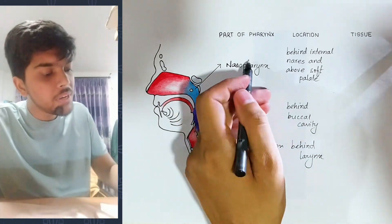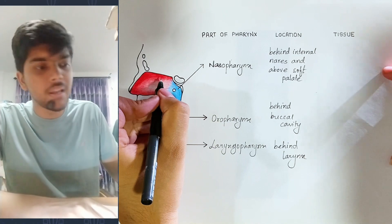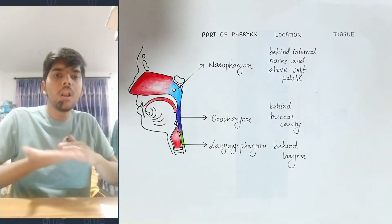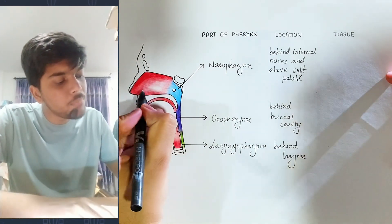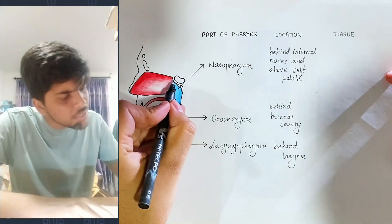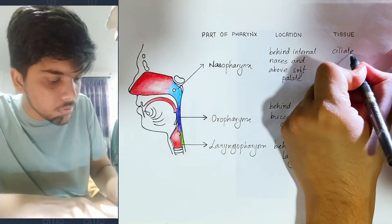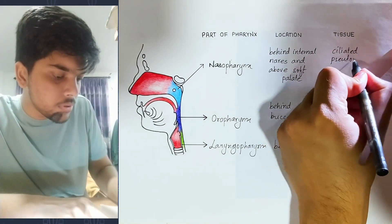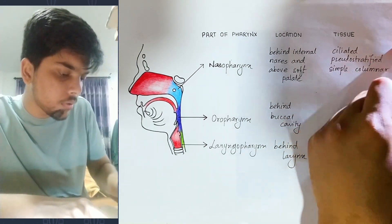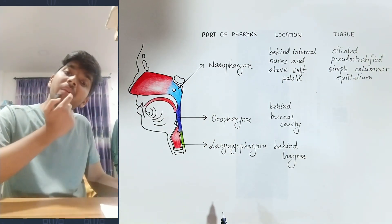The nasopharynx has a ciliated pseudo-stratified simple columnar epithelium, since the nasal chamber also has this epithelium. The nasal chamber internal wall is lined by pseudo-stratified simple columnar epithelium. So the nasopharynx is also lined by ciliated pseudo-stratified simple columnar epithelium. Similarly, the buccal chamber internal wall has an epithelium lining.